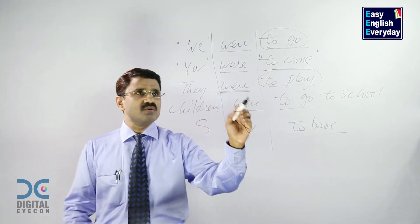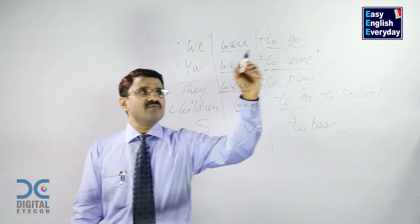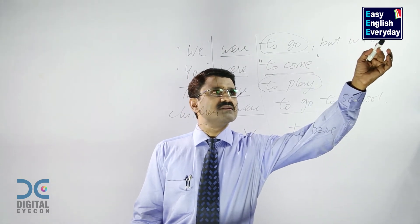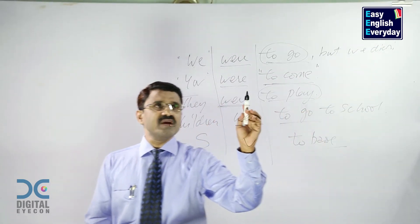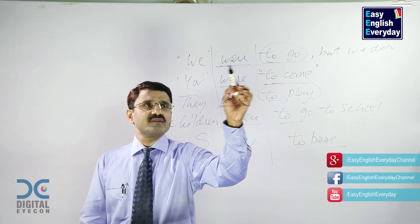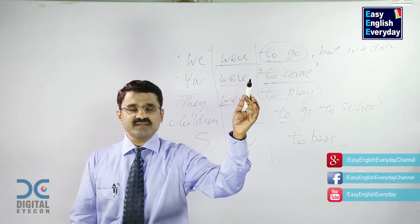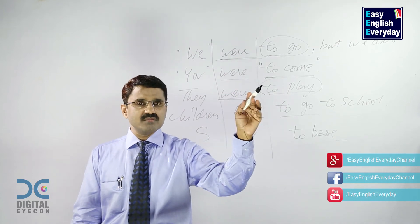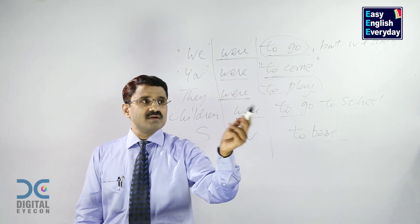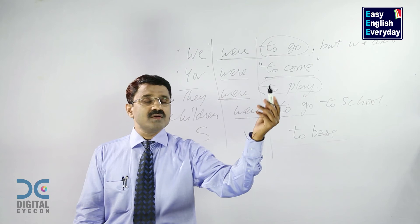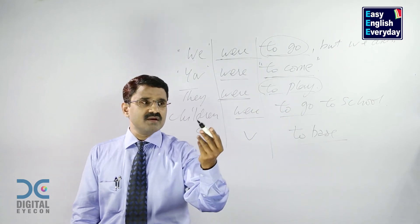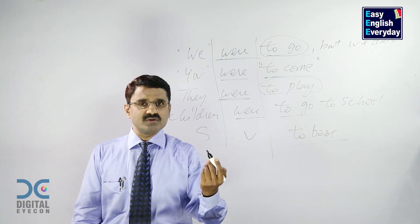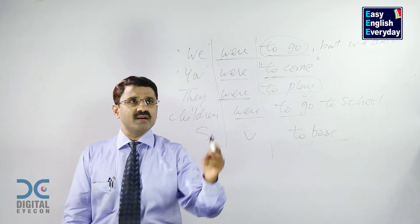Children were to go to school. Now see this example: 'We were to go, but we did not.' That means it was compulsory for them to do this action in the past, but they did not do it. 'You were to come, but you have not come.' 'They were to play the football, but they could not play.' 'Children were to go to school today, but they could not go to school because of heavy rain.'